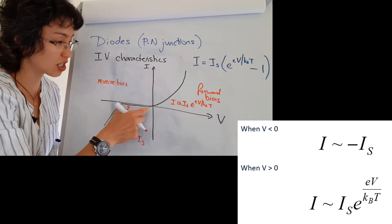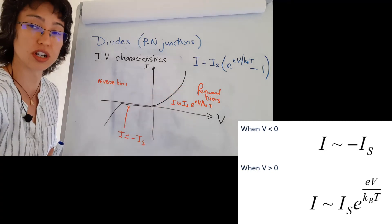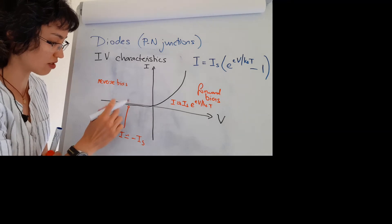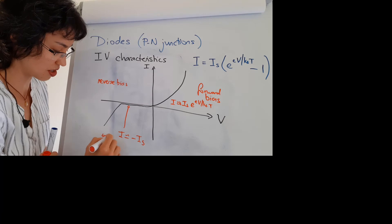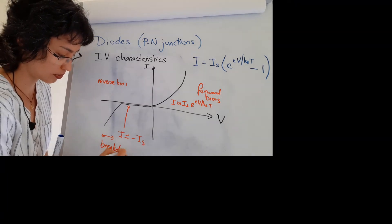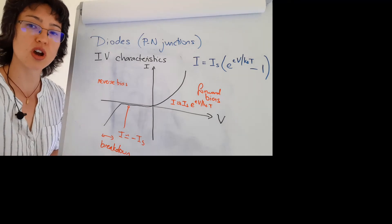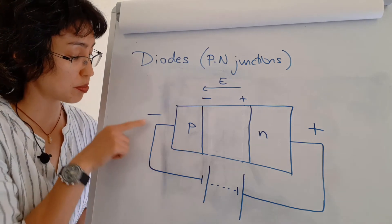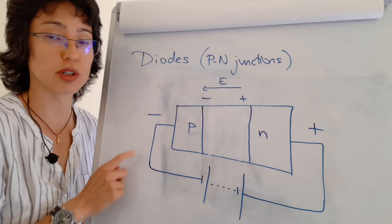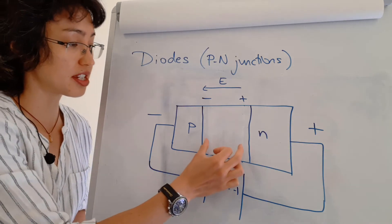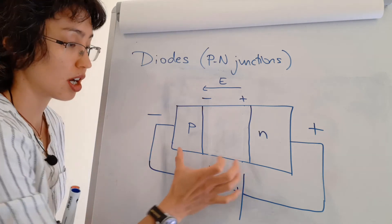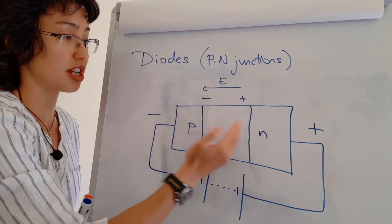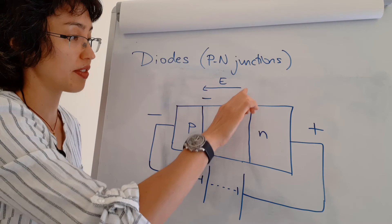In forward bias you have conduction of current, and after a certain voltage in reverse bias you get breakdown. I'll briefly discuss how the device breaks down. In reverse bias, with the negative terminal on the P-side and positive on the N-side, the depletion region has become a lot larger. The electric field in the depletion region is negative on the P-side — because electrons moved there — and positive on the N-side.